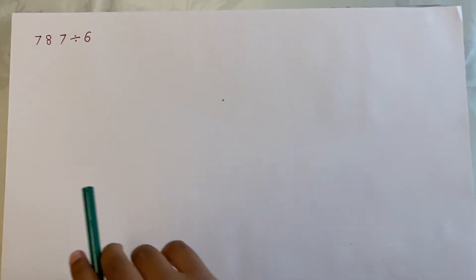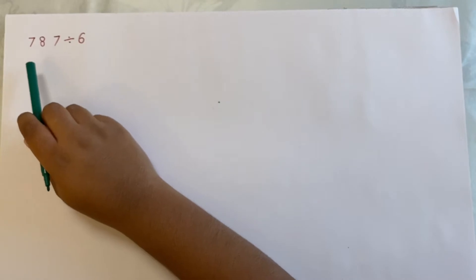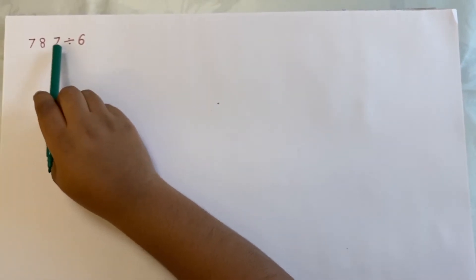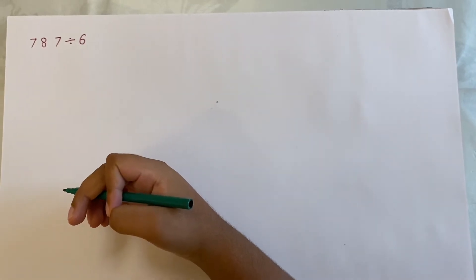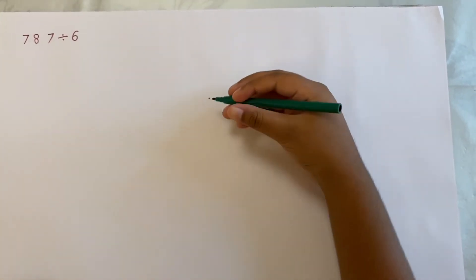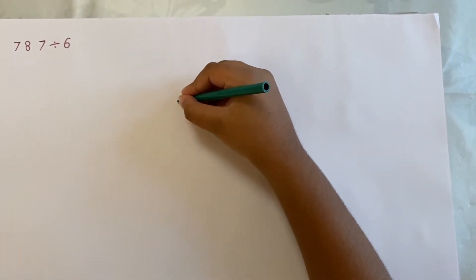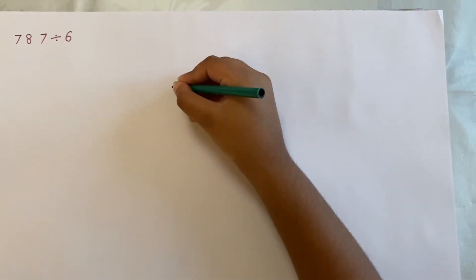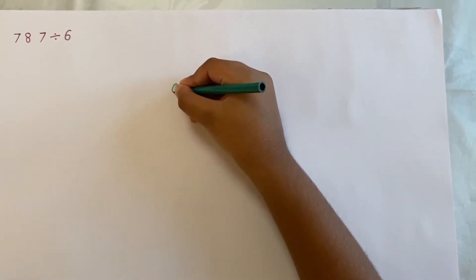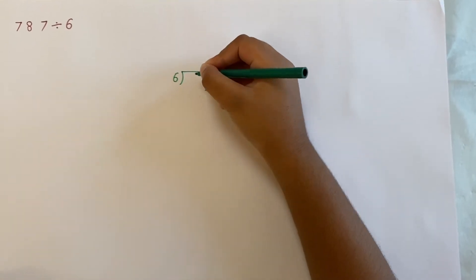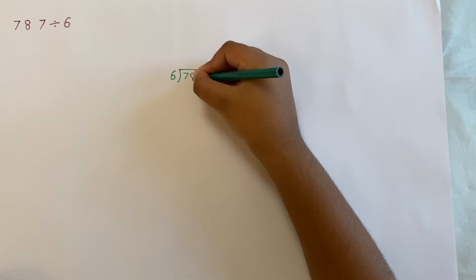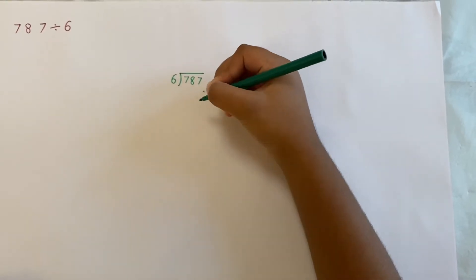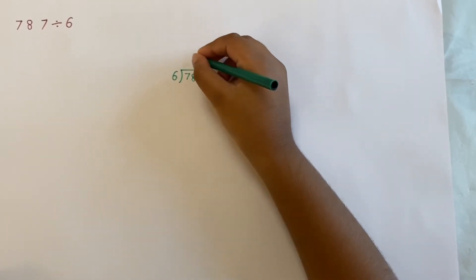Here we have our equation of 787 divided by 6. We need to write this in its calculating form. We would put the 6 here as the divisor, the 787 here as the dividend, and you're waiting for the quotient and the remainder.